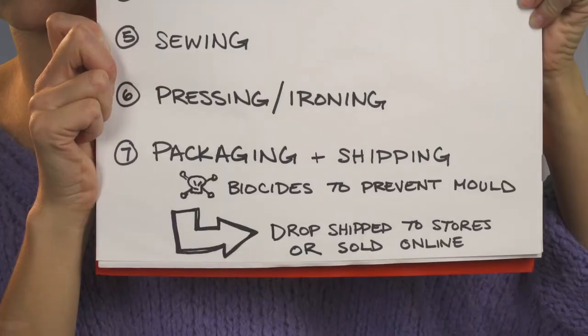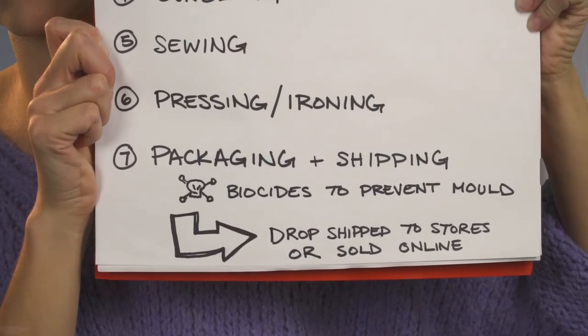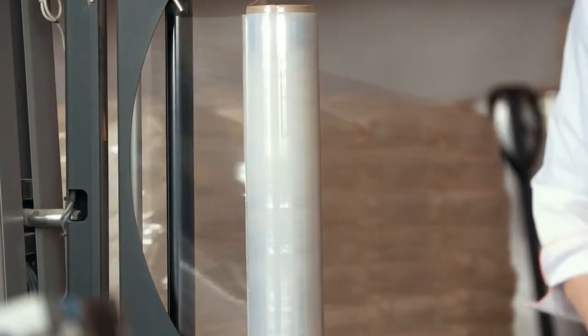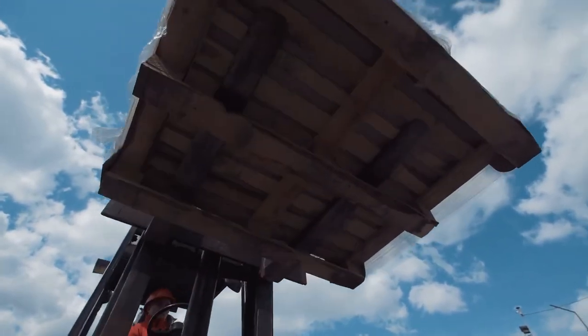Before they pack it, they add biocides, which are a preventative for mold. Any of those cellulose fibers are going to mold if given moisture. And when it travels on a boat, moisture does happen, so biocides are added before they pack it. Then they package it in more plastic and ship it off, drop-shipping it at a store.